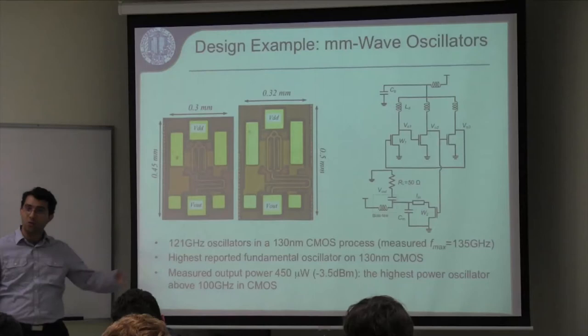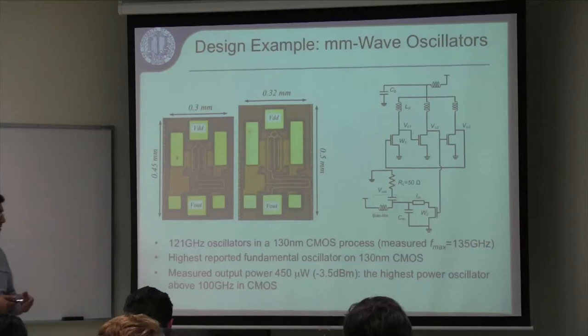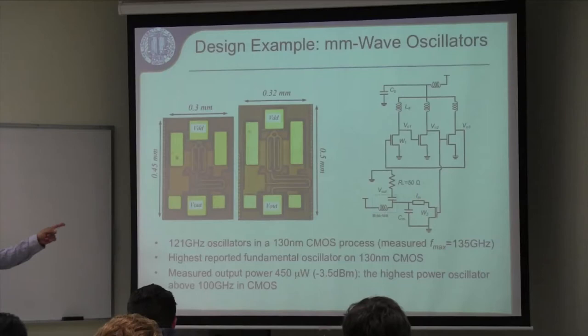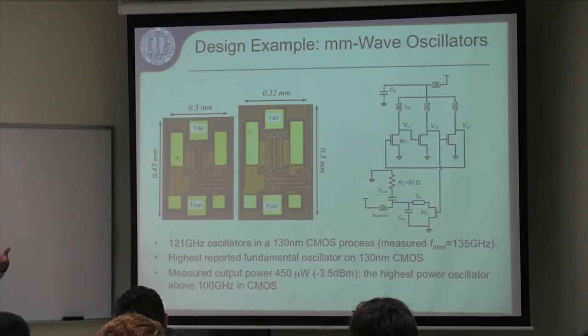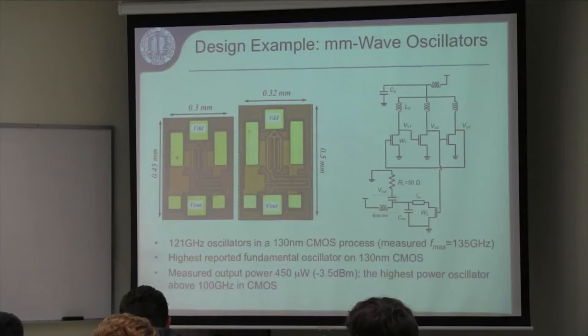Q: What do you mean by measured fmax? A: We pick the device, do all EM simulations for the gate, drain, and interconnect layers, place ports there, and extract fmax that way. The 174 GHz is with nothing connected; the measured value accounts for layout parasitics. You can see output power is also relatively high at around -3.5 dBm, and these results remain the highest fundamental oscillation frequencies in 130 nm technology.